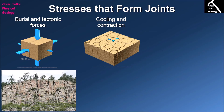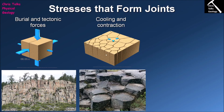As our rock cools down it's going to contract and get smaller as it loses heat. During this contraction process, our rock can fracture, leading to the formation of columnar joints. We can see some right here in this basaltic flow — the formation of hexagonal and pentagonal columns due to cracks which have formed as the lava flow cooled down.